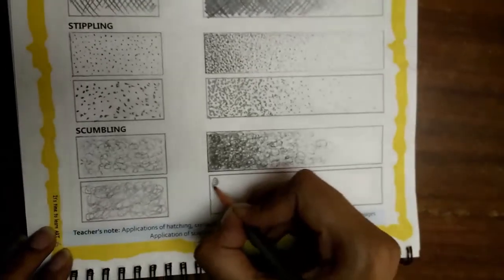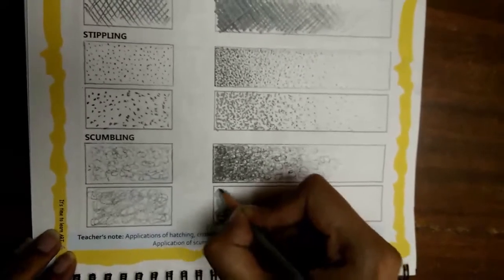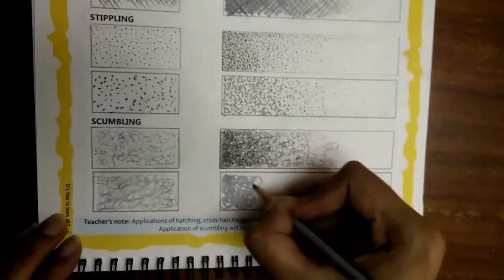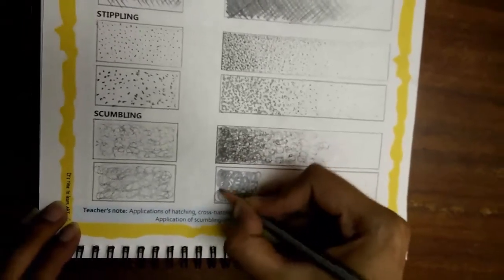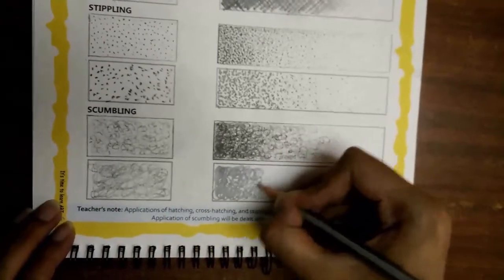Let us make a value scale with scumbling. Again, apply greater pressure for darker shades and make the marks dense. Go on releasing the pressure as you move towards the lighter shades.